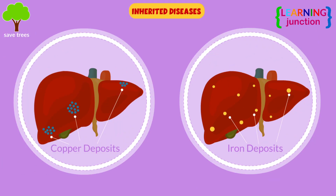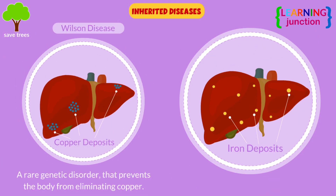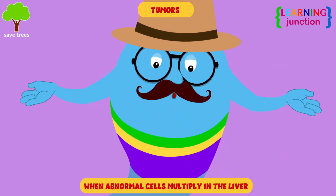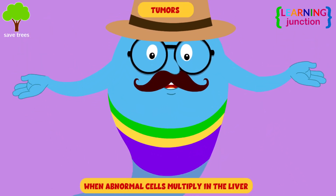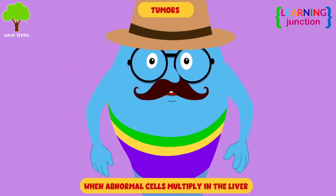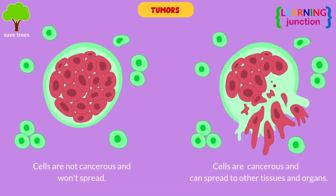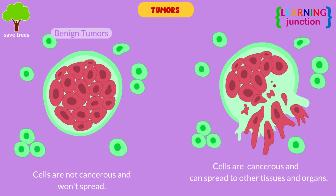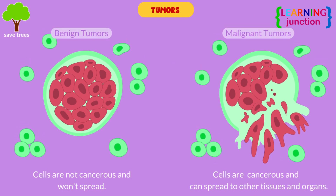Inherited diseases: some liver issues like Wilson disease and hemochromatosis develop because of genetic conditions. Tumors: when abnormal cells multiply in the liver, you may develop tumors. These tumors may be benign or malignant.